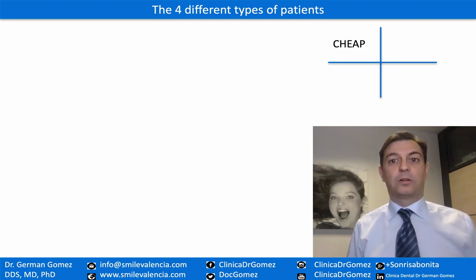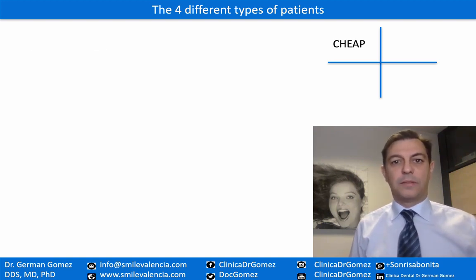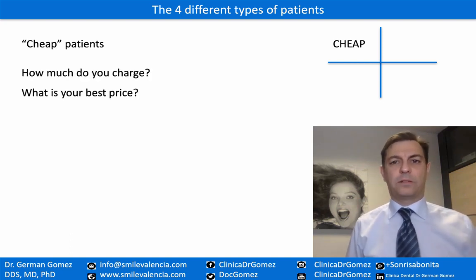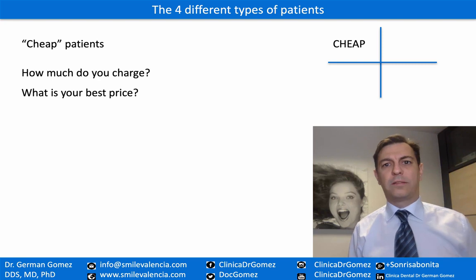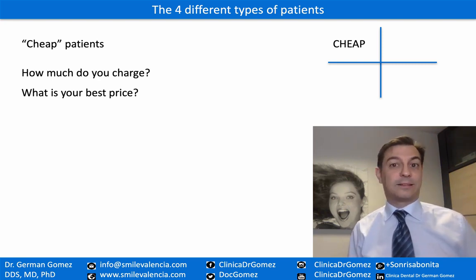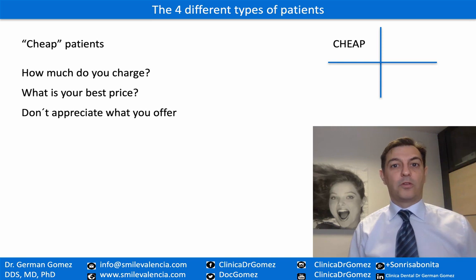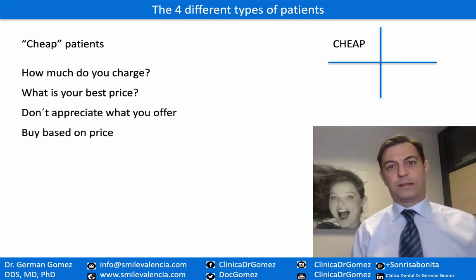The first type of patients I call cheap patients. They are not really cheap, but you'll understand why in a second. They are always asking about your price — how much do you charge, what is your best price. They are always bargaining, trying to lower your price, always telling you they can get the same treatment somewhere else for less money. They don't appreciate what you offer, your preparation, your education, or your service. What they want is a cheap price. They buy based on price.